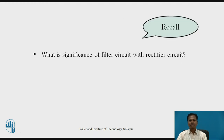Students should pause the video here and recall what is the significance of a filter circuit with a rectifier circuit. The output of a rectifier circuit is in terms of sinusoidal pulses — it contains both AC component and DC component. So the output of a simple rectifier is not pure DC; it contains ripple. A filter circuit is connected at the output of the rectifier circuit to filter out unwanted ripple content, so that we get pure DC output.